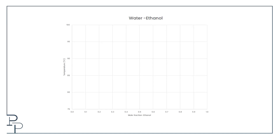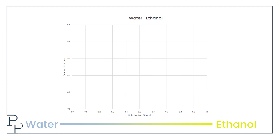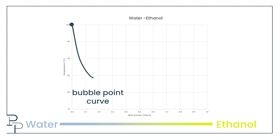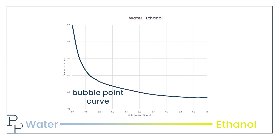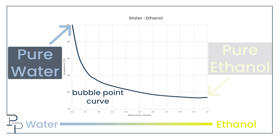We can plot the bubble point temperature against the fraction of ethanol remaining in the liquid phase — usually plotted against mole percent. This store-bought water-ethanol mixture starts at around 17 mole percent. As we boil it, the amount of ethanol in the liquid drops and the bubble point increases. This is known as a bubble point curve. On this curve you have pure water and its boiling point at one end, and pure ethanol with its boiling point at the other.